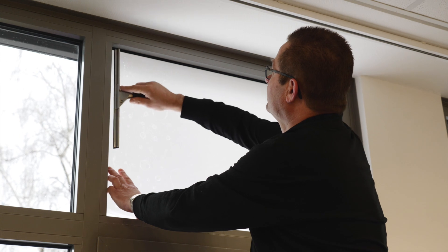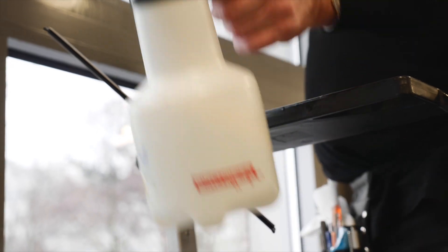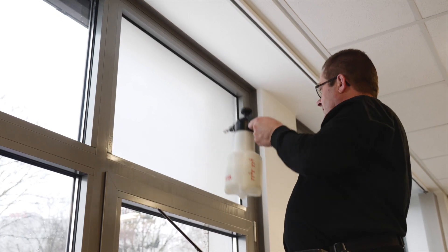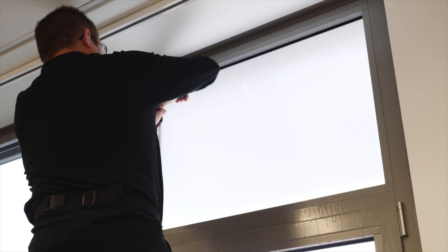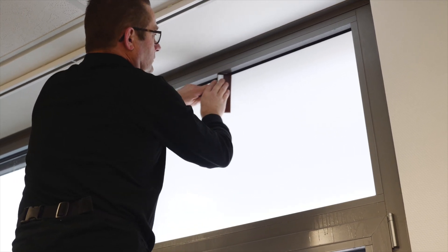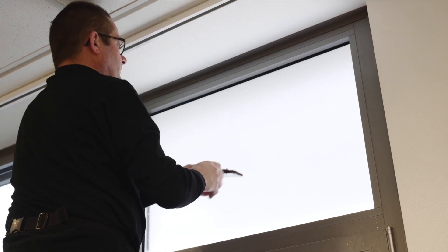Next, use the larger window cleaning squeegee to remove the excess water. Wet the film again and switching to the smaller window film squeegee and using both hands for maximum pressure, remove the remaining water. This is best achieved by starting at the top in the centre and pushing the water to the edges on both sides.